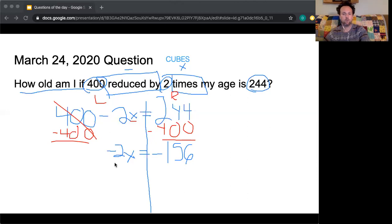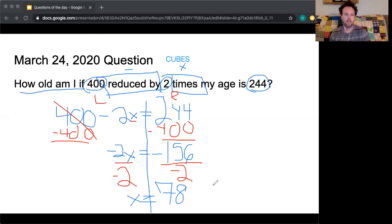Last step, I'm going to divide both sides by negative 2. It's important that I'm dividing by negative 2 because my answer needs to be positive. We can't have a negative age. So negative 156 divided by negative 2, since they're both negative, my answer is going to be positive, which leaves me with positive x equals positive 78. So I am 78 years old if 400 reduced by twice my age gives me 244.